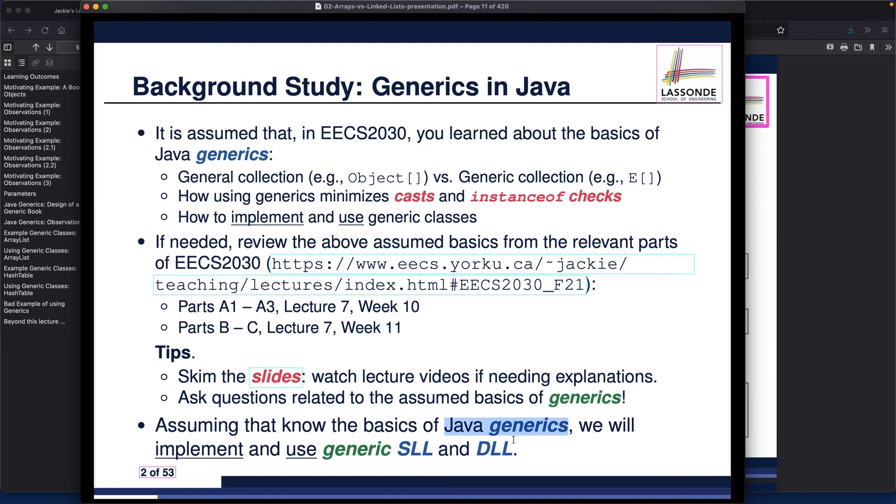Assuming that you know about the basics of Java generics, from week number three, we will actually show you how you can implement and use generic singly linked lists and doubly linked lists. Not this week. For this week, even if we reach the singly linked list lecture, we're only going to talk about a non-generic version, just to make sure you can understand the algorithmic part well before we get to the generic version. So that's about the background study that I really hope you will learn and catch up on. Let's now take a look at the learning outcomes for this week.